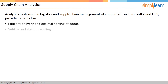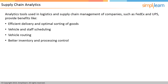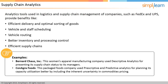Analytics is also used for vehicle and staff scheduling, vehicle routing, inventory control, and efficient supply chains, spanning the complete analytics spectrum. For example, women's apparel manufacturer Bernard Claus Inc. used descriptive analytics to present its supply chain status to managers. ConAgra Foods used prescriptive and predictive analytics for better capacity utilization planning, incorporating inherent uncertainty in commodities pricing, and received 100 percent return on their analytics investment in less than three months.